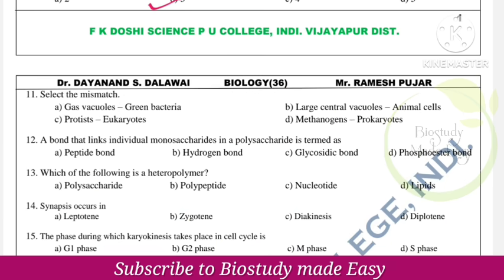Next: select the mismatch. Methanogens are prokaryotes found in archaebacteria — that is correct. Large central vacuoles: animals do not have large central vacuoles; they have small vacuoles. Large central vacuoles are found in plant cells.